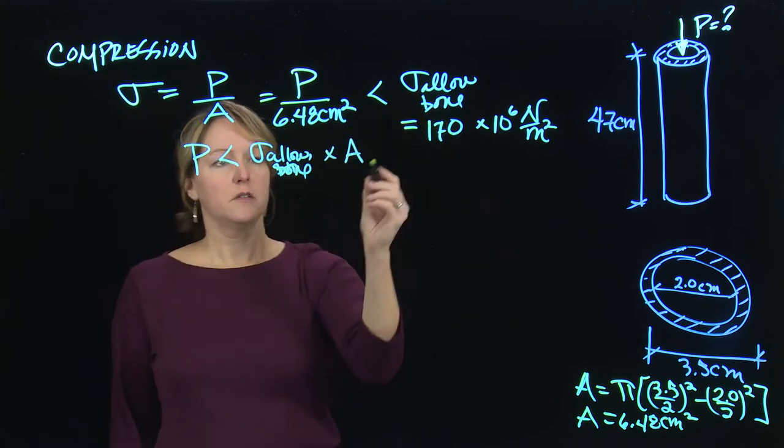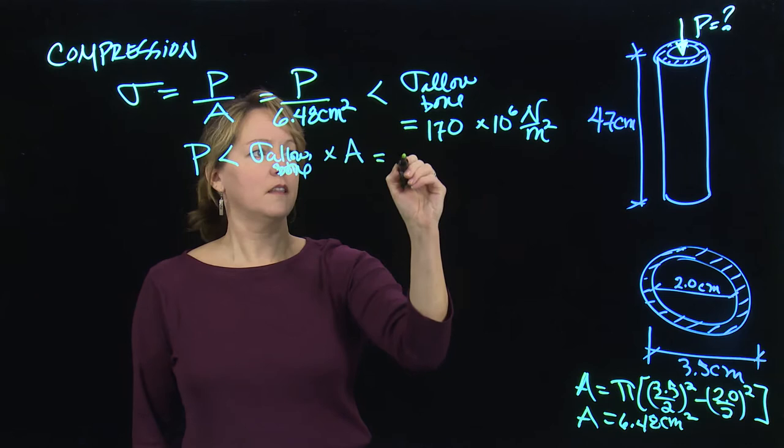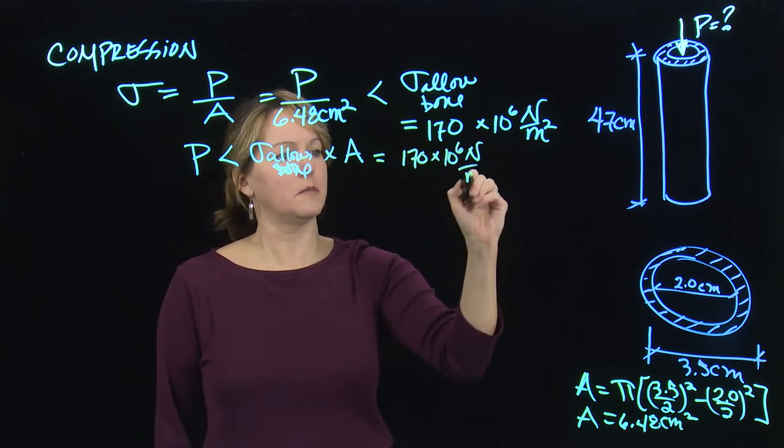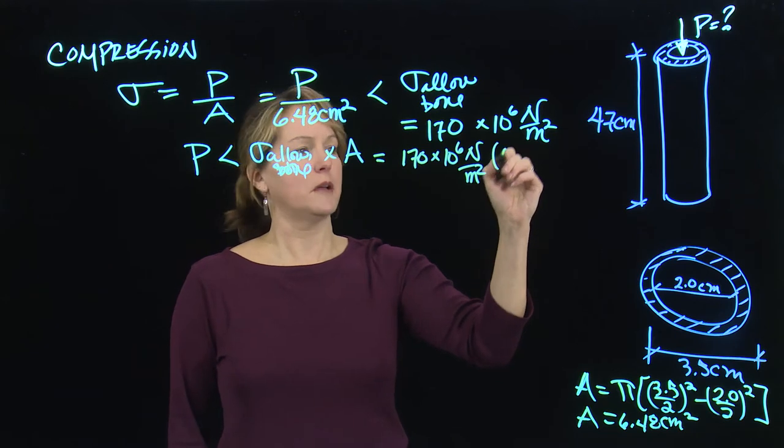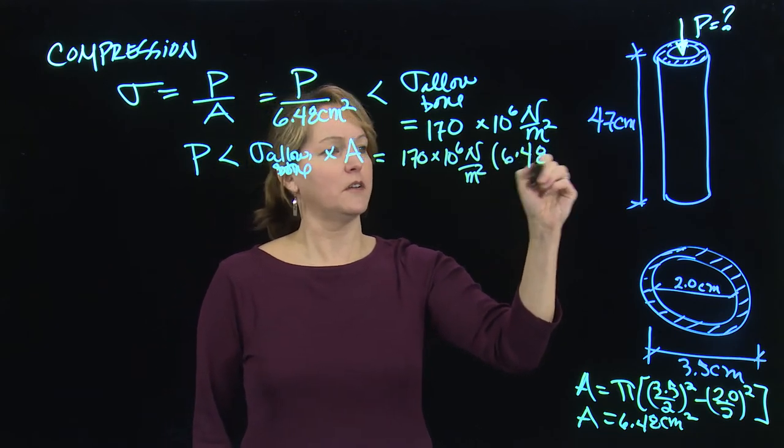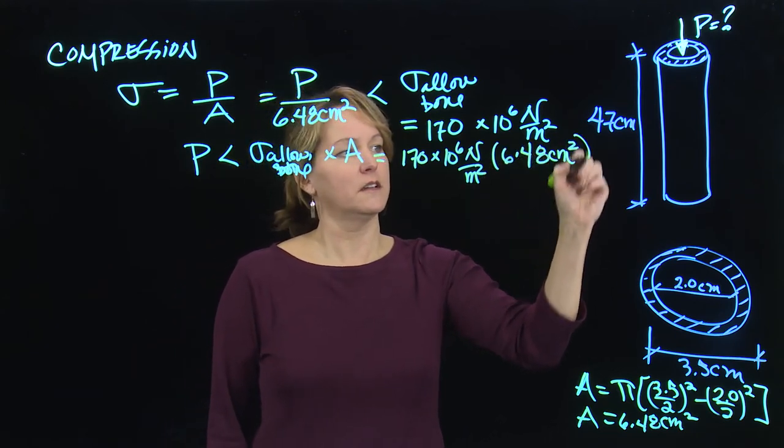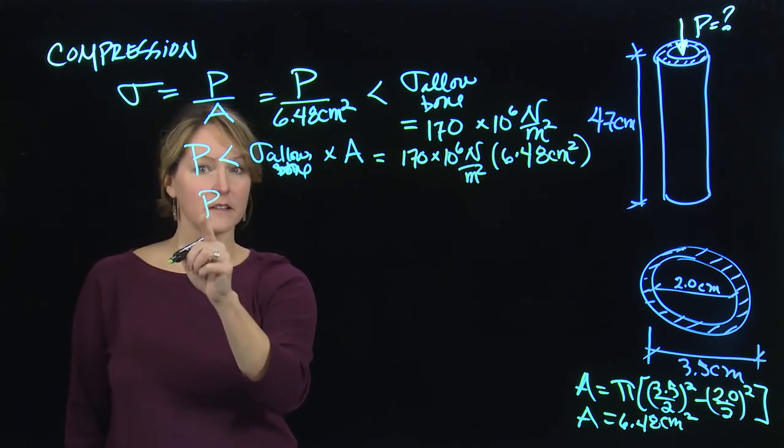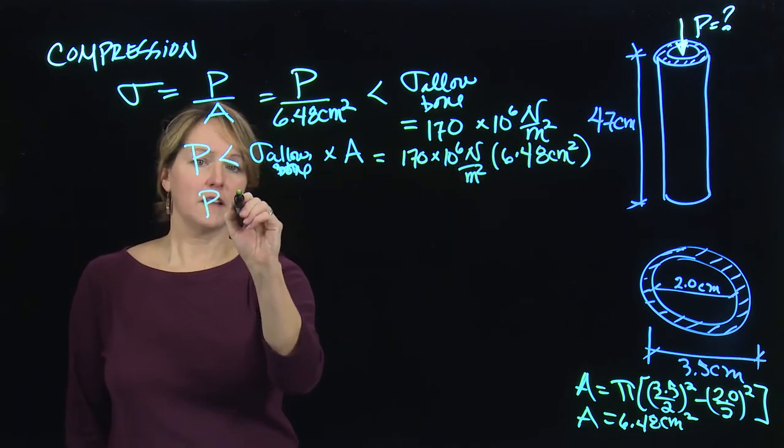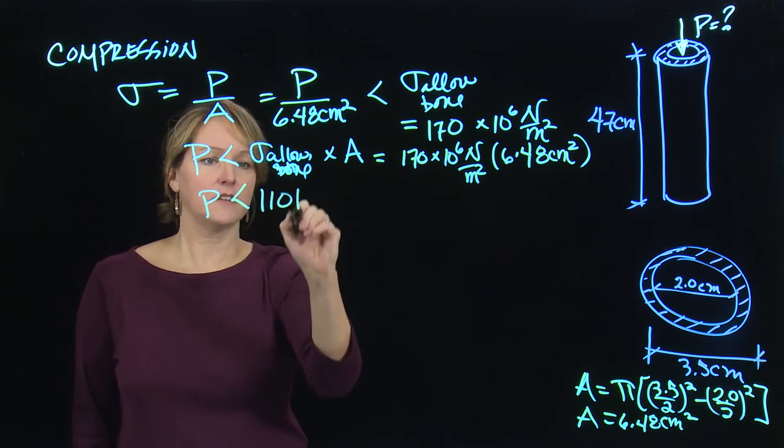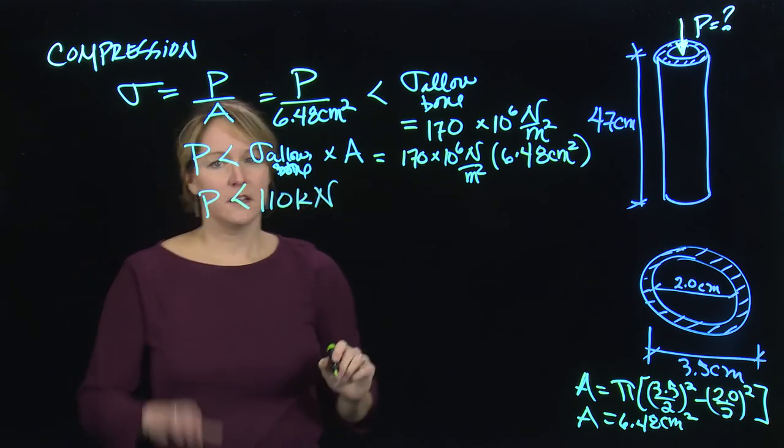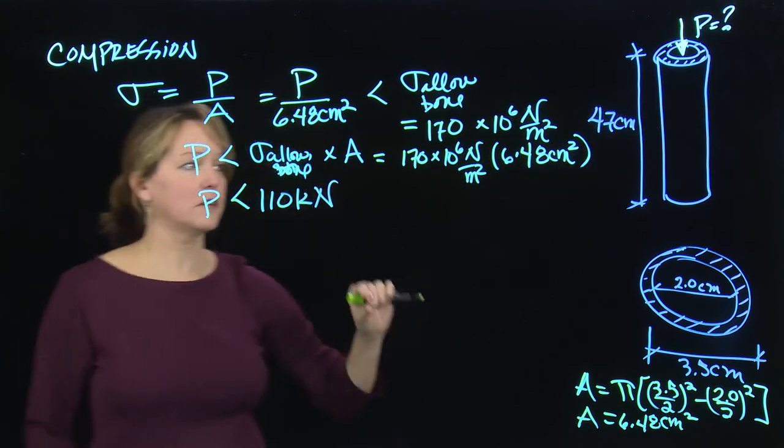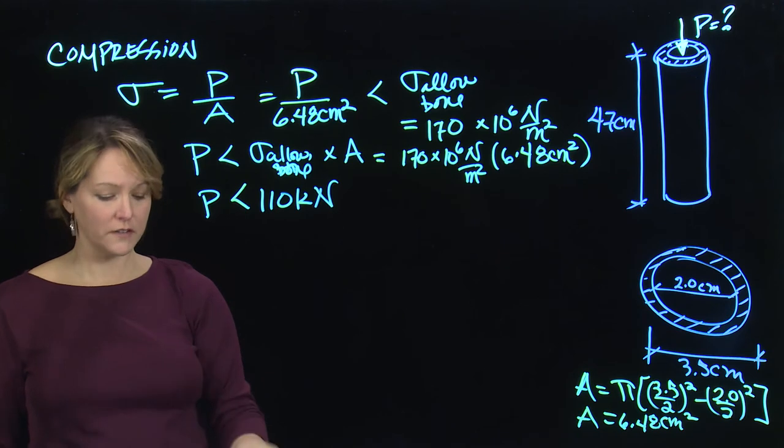So just multiplying the cross-sectional area up. And that is 170 times 10 to the sixth newtons per meter squared, multiplied by the cross-sectional area, which is 6.48 centimeters squared. I'd have to do some conversions on my units. But I could calculate this allowable load. And I find that the allowable load has to stay less than 110 kilonewtons. So that's the allowable load if I have a compression failure. So if I push on it so much that it crushes.